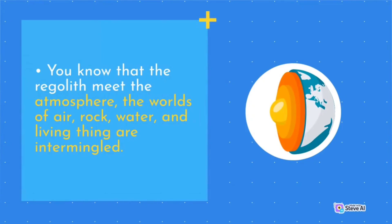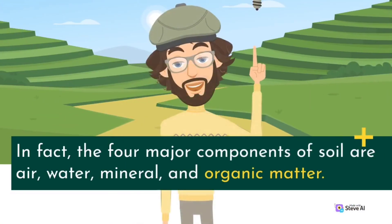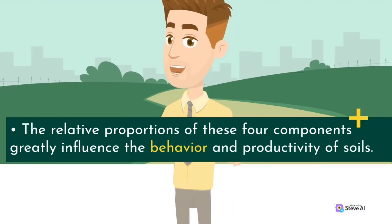You know that the regolith meets the atmosphere — the worlds of air, rock, water, and living things are intermingled. In fact, the four major components of soil are air, water, mineral, and organic matter. The relative proportions of these four components greatly influence the behavior and productivity of soils.